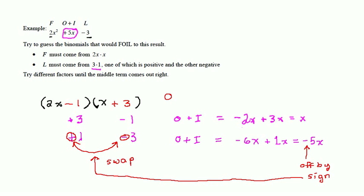And if we do an outer plus inner calculation now, or you could do the whole FOIL just to be sure, we get 2x times 3 is 6x, negative 1 times x is minus 1x, which becomes 5x. And that is equal to our exact middle term.